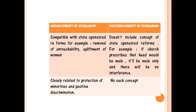Lastly, the Indian concept of secularism is closely related to the protection of minorities and positive discrimination. This provision is provided in our constitution itself, with explicit protection given to minorities in Articles 29 and 30. In its functional form, the Indian concept is entirely different from the Western concept, even though the main ideology is the same — in practice it is quite different.